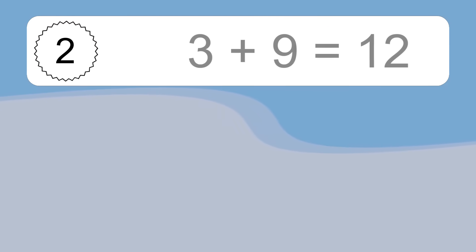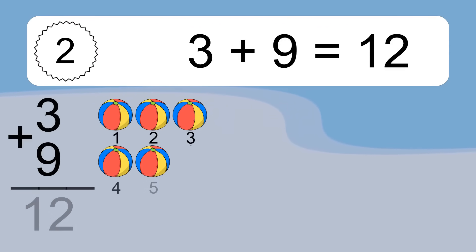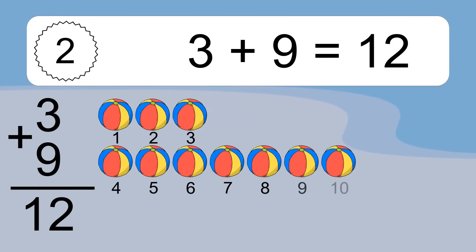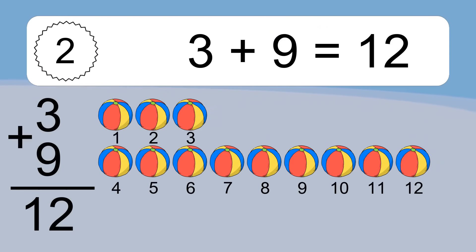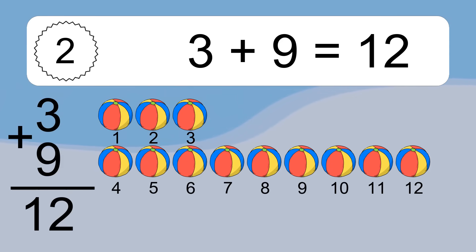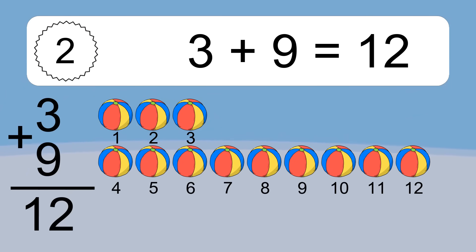3 plus 9 equals what? 3 plus 9 equals 12. Let's count it. 1, 2, 3, 4, 5, 6, 7, 8, 9, 10, 11, 12.